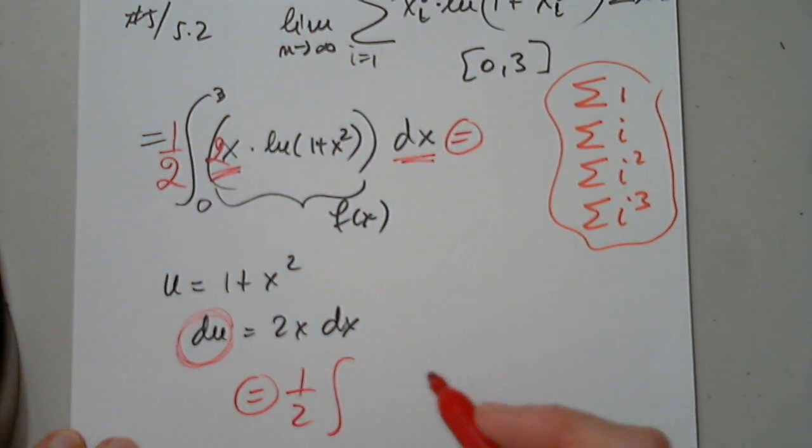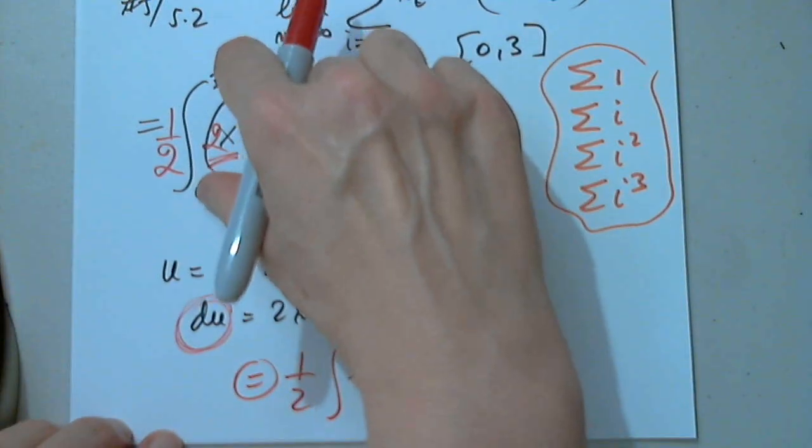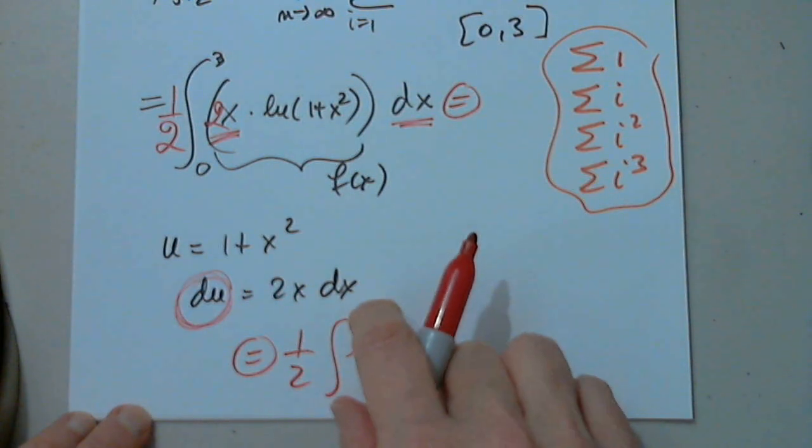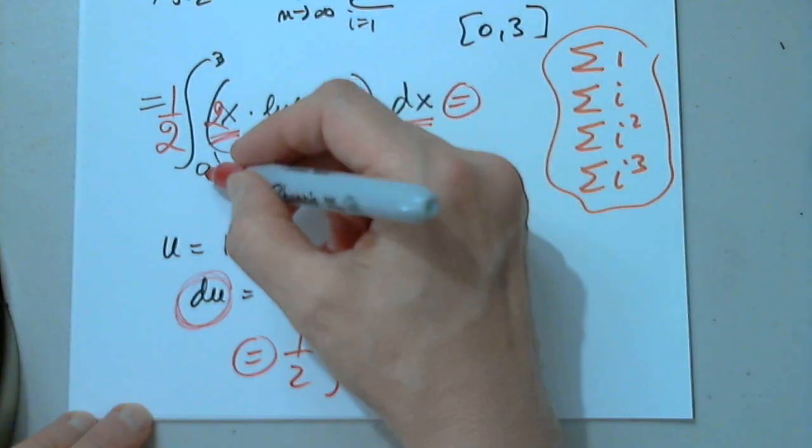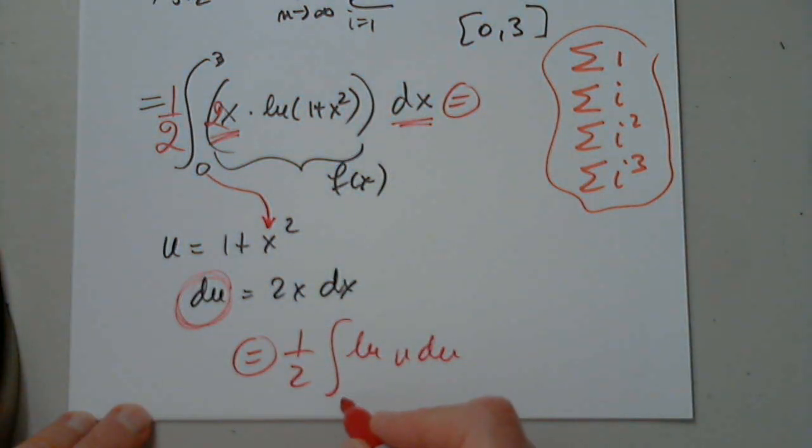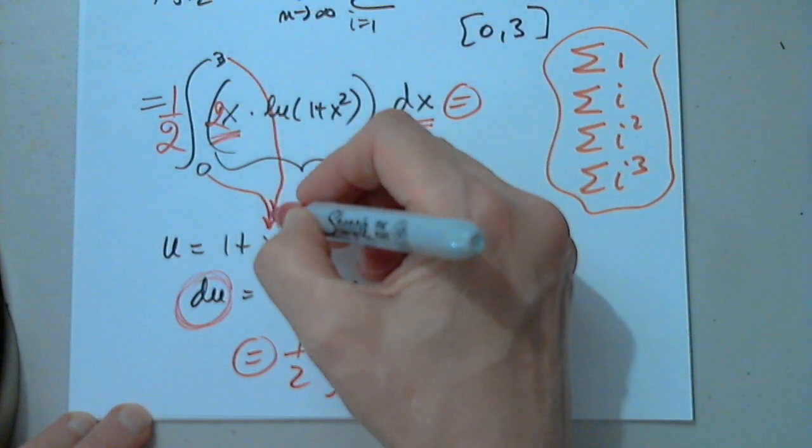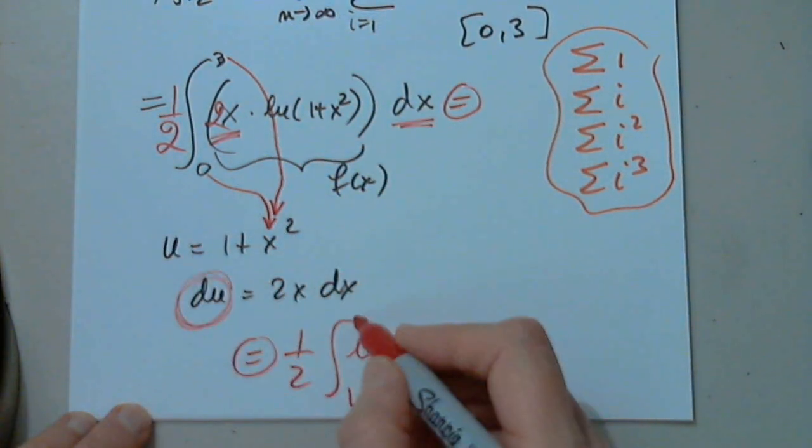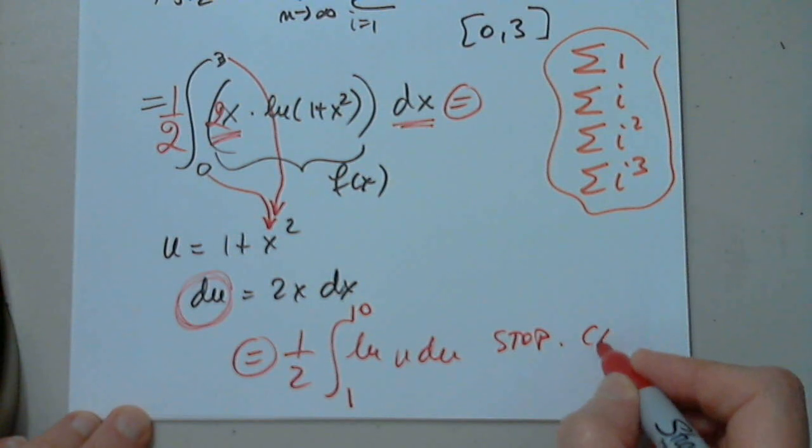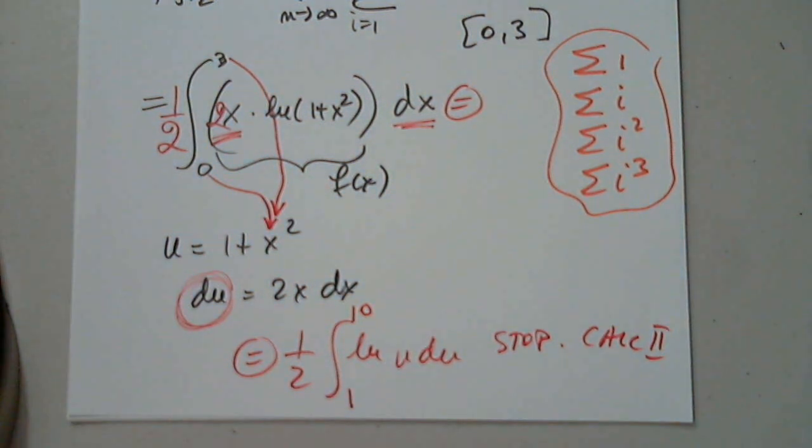So this is the integral from natural log u du. If you copy zero to three, you can't get full credit. That will be a tragedy. So when the lower limit for x is zero, what do I copy for u? One. Perfect. When the upper limit is three for x, what do I copy for u? Ten. That's it, and we have to stop and wait till calc two to continue with this one.